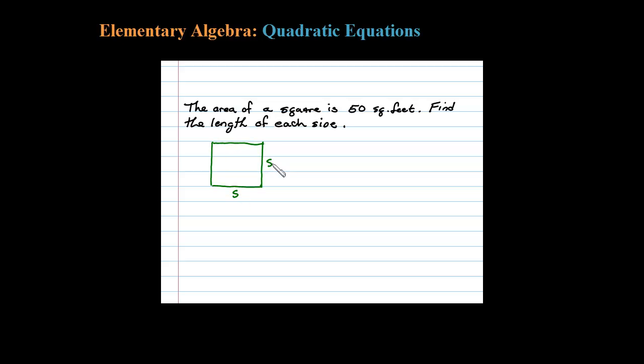So the area is length times width. The area for a square is s squared. It tells me the area is 50 square feet, so let's go ahead and substitute that in for A. And this here is our setup: 50 equals s squared.